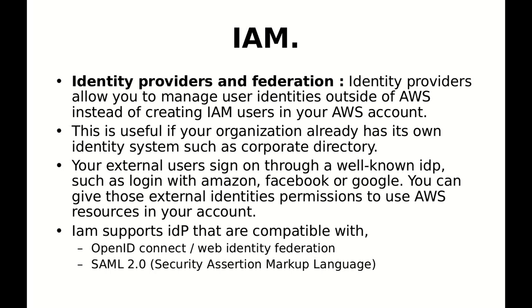The same thing can be done with AWS as well — that is where identity providers are useful. This is useful if your organization already has its own identity system such as a corporate directory. At a company level, a commonly used one is SSO — single sign-on — where you use SSO credentials to log into company applications. Your external users sign on through a well-known identity provider such as Login with Amazon, Facebook, or Google.